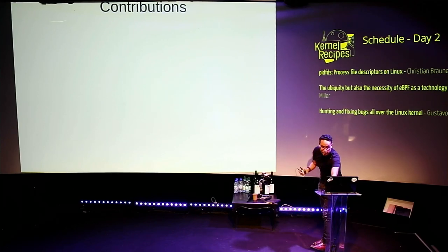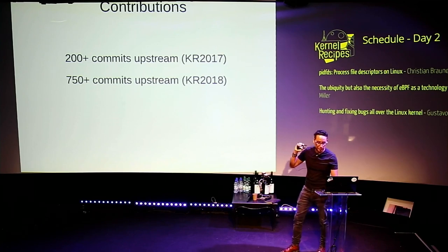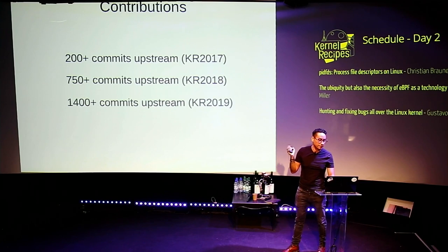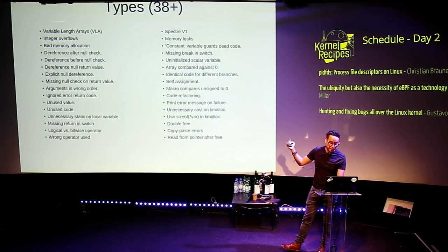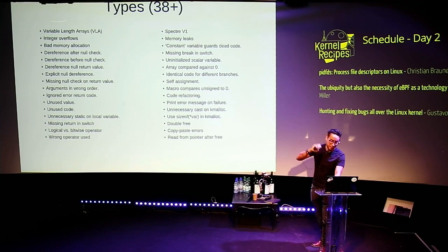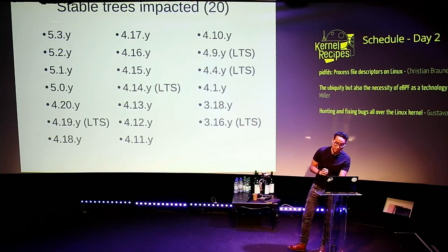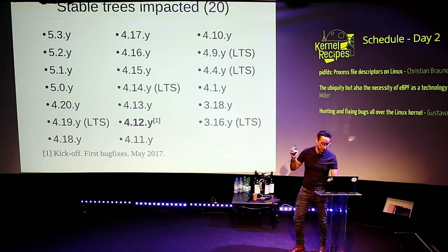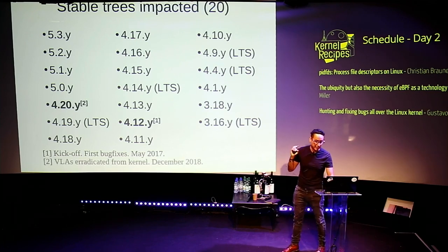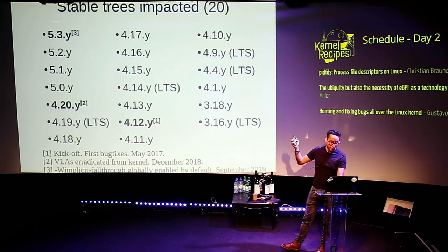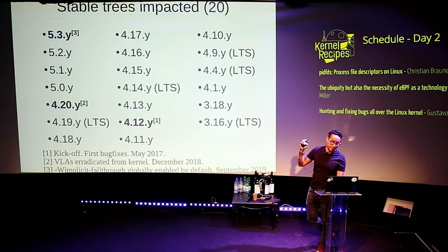Results and contributions: in 2017 I contributed a little more than 200 commits; in 2018, a little over 750 commits; and now 1,400. Categories of bugs fixed: more than 10. Types of issues fixed: more than 38, including some Spectre mitigations. Systems and components impacted: all of these. Stable trees impacted: 20. I sent my first bug fixes during the development cycle of 4.12. Then in 4.20, VLAs were finally eradicated from the kernel. And in 5.3, the implicit fall-through flag was globally enabled by default. I am really, really happy. Thank you.